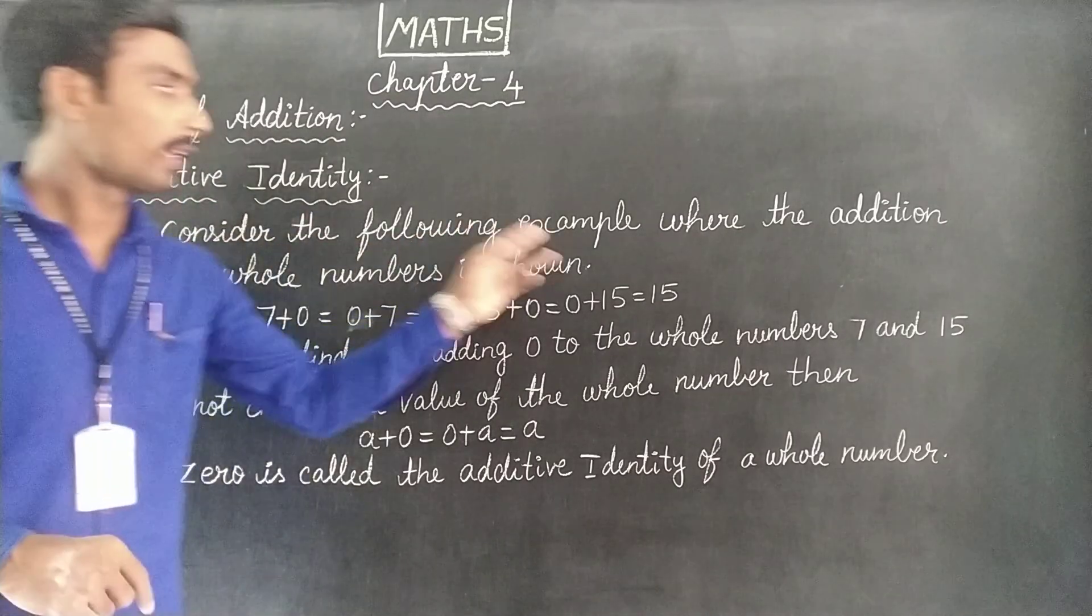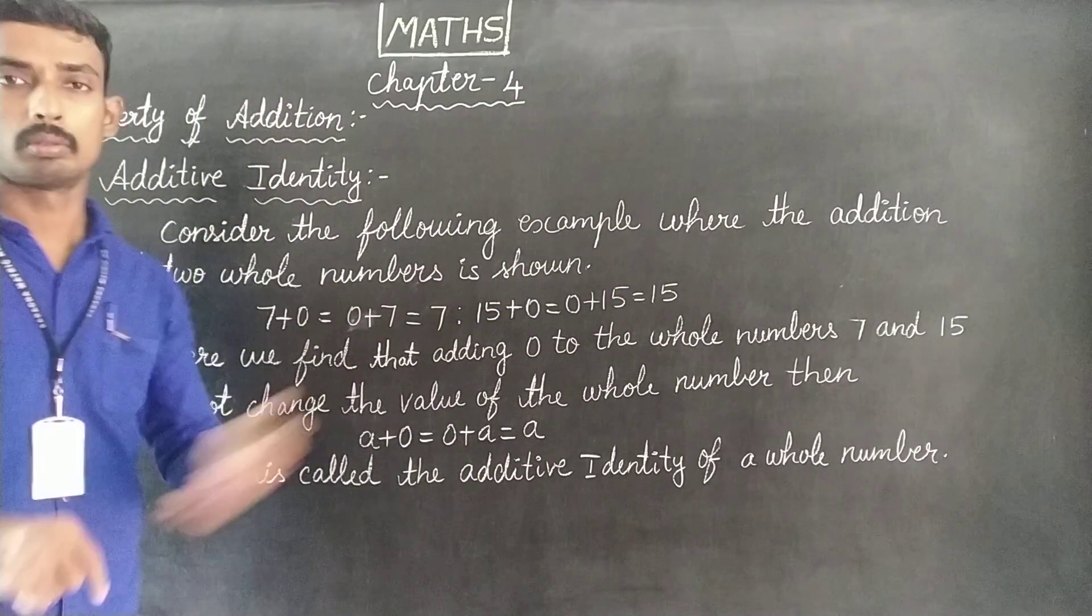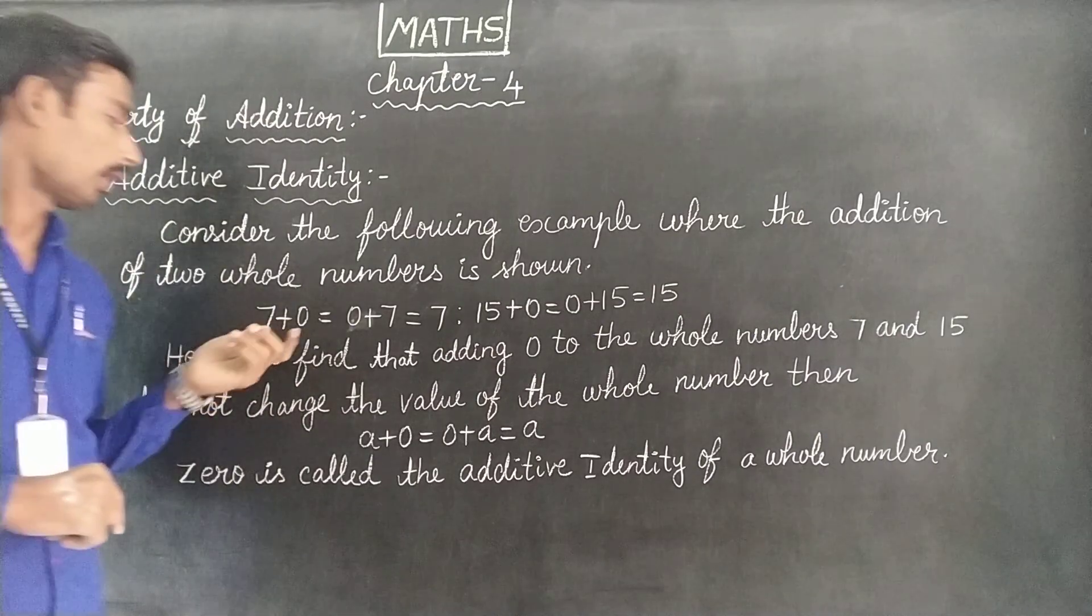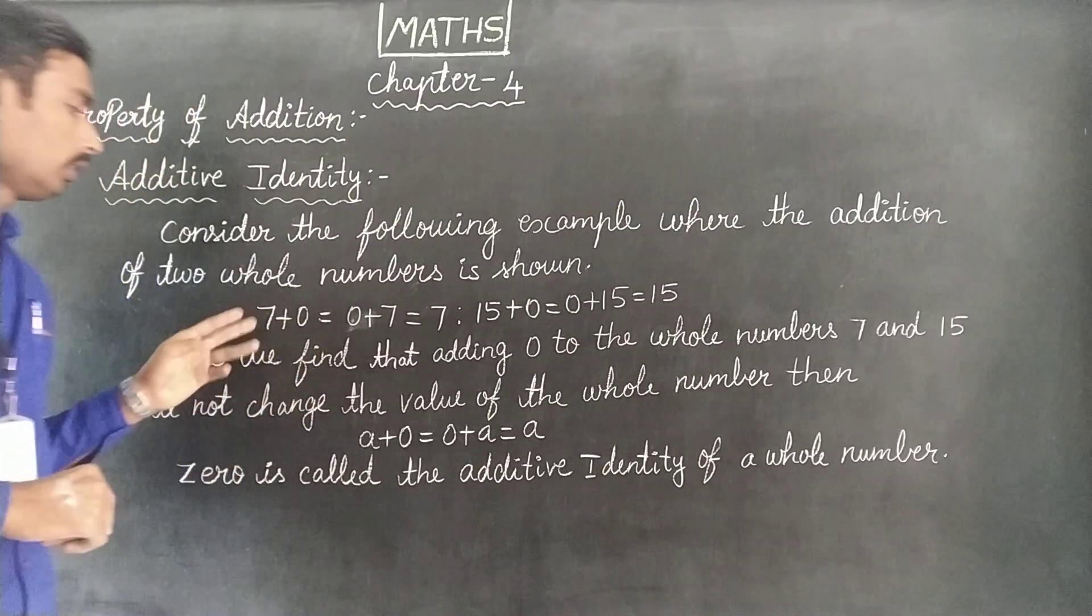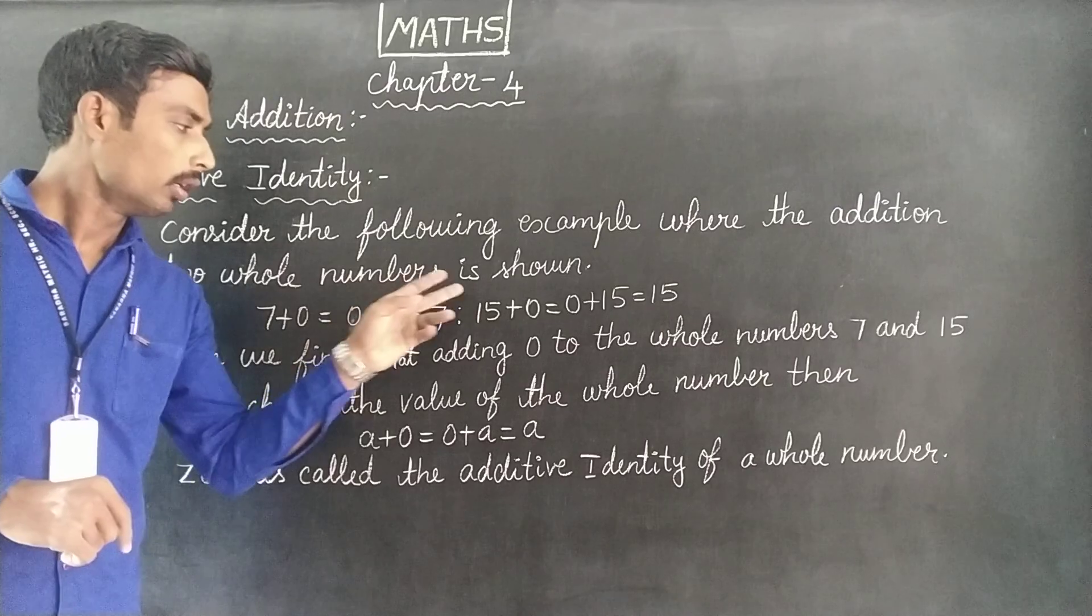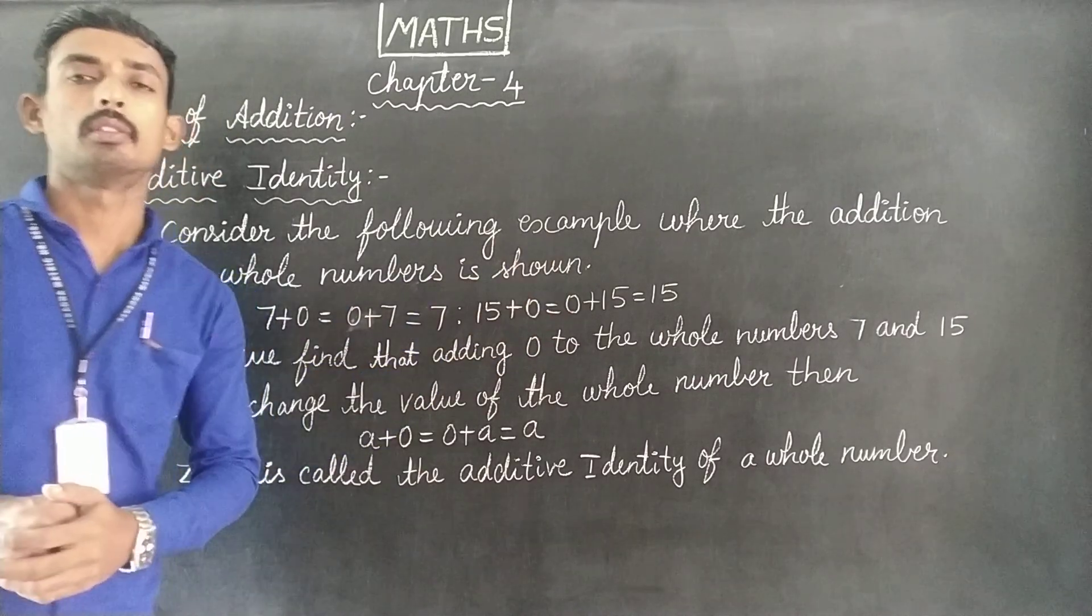Consider the following example where the addition of two whole numbers is shown. If you look at the addition of two whole numbers, the addition is: 7 plus 0 equals 0 plus 7 equals 7; 15 plus 0 equals 0 plus 15 equals 15. Additive identity.